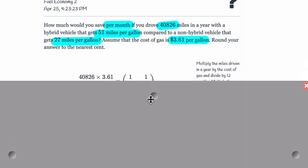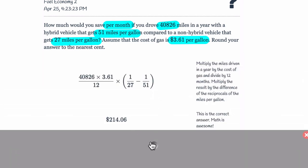So what's going on here? Let's look at the solution. So you've got the miles times the cost, and then here's that difference in the reciprocals. Non-hybrid minus hybrid. But notice, the only difference from last time is now we have 12 here because we're looking per month. If it's per week, you can probably guess it's going to be a 52, and if it's per day, it's 365.